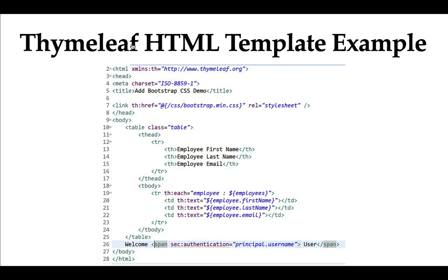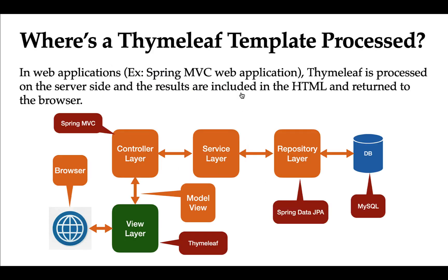Consider one more example of a Thymeleaf template. This HTML template has HTML code along with Thymeleaf expressions and attributes. Notice `${employees}` — here `employees` is a Java variable, and we use a Thymeleaf expression to access it. `th:each` and `th:text` are Thymeleaf attributes. This is a good example of a Thymeleaf HTML template combining HTML code with Thymeleaf expressions and attributes.